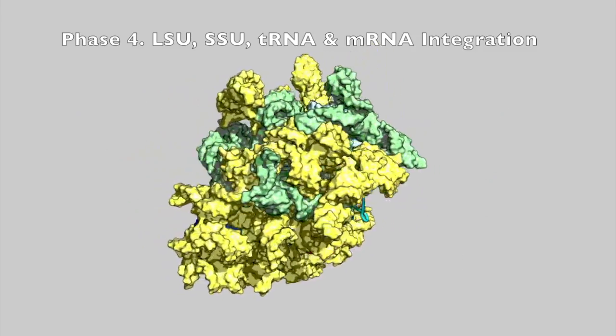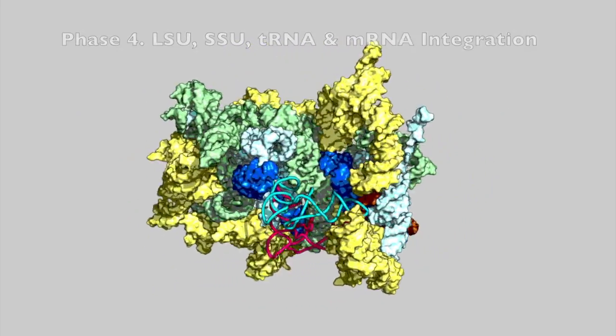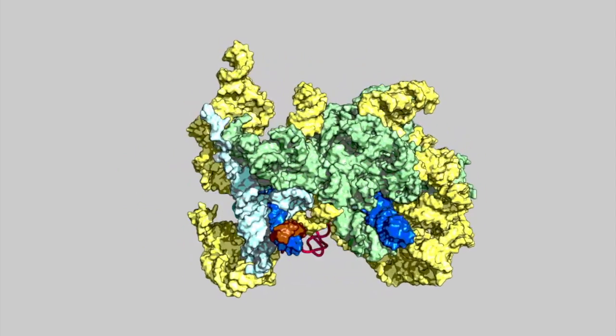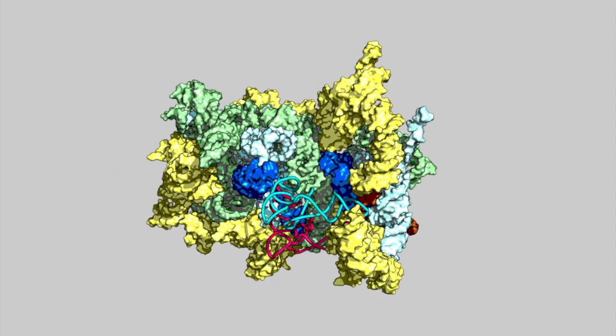In phase 4, in the LSU, the tunnel is further developed. The SSU gains well-defined binding pockets for the tRNAs.